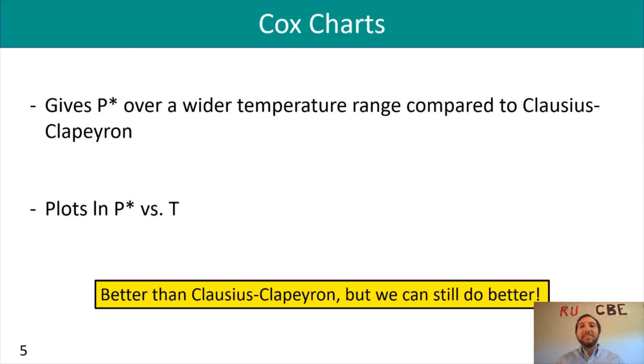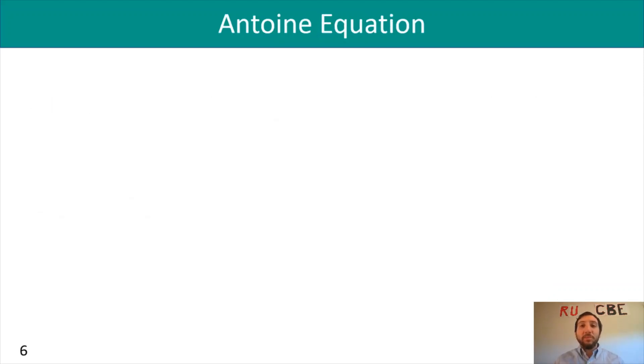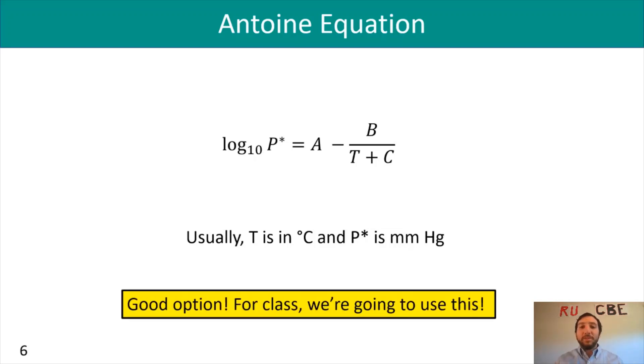That leads us to the last option for estimating vapor pressure, which is the Antoine equation. The Antoine equation has the form log₁₀ P* = A - B/(T+C), where usually T is in degrees Celsius and P* is in millimeters of mercury. This is a great option, and for class we're going to be using this.